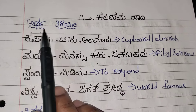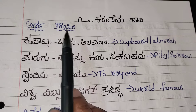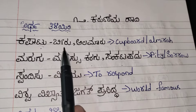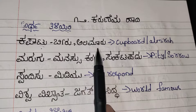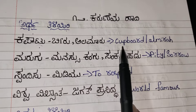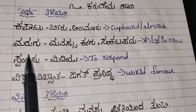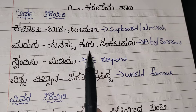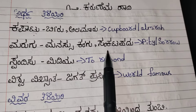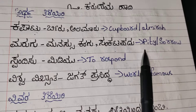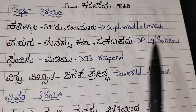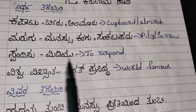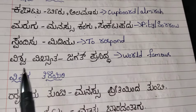First, let's see the meanings. Artha, Tidiri. Kapatu, Beeru. Alamaru means Kabod or Almara. Marugu, Manassu, Karagu, Sankata. Padu means Piti or Saru. Spandisu, Mediyu means to respond.